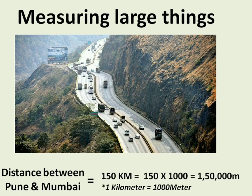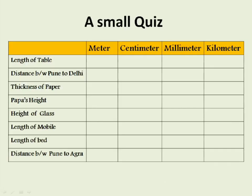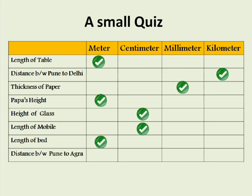I hope you are clear with measurement units now. So let's have a small quiz. In the first column there are a list of objects. You have to find out the suitable measuring unit for them. For length of the table, the unit should be meter. For distance between Pune to Delhi, it should be kilometer. Thickness of paper — it should be millimeter. Papa's height — it should be meter. Length of glass — it should be centimeter. Length of mobile — it should be centimeter. Length of bed — it should be meter. Distance between Pune to Agra — it should be kilometer. Isn't it simple now?